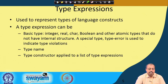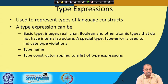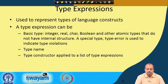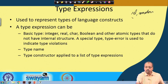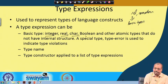A type expression can have basic types, like any expression can have basic identifiers and some operands. For type expressions, there can be some basic types which are synonymous to identifiers in a normal expression. In a normal expression there are identifiers and operators. In case of type expressions, these identifiers are basically the types themselves — the basic types like integer, real, character, boolean, and other atomic types that do not have internal structure.